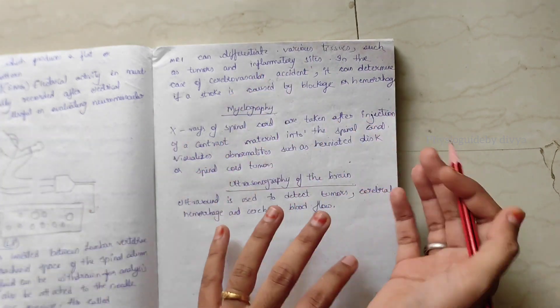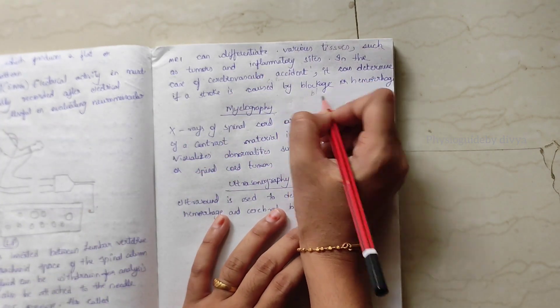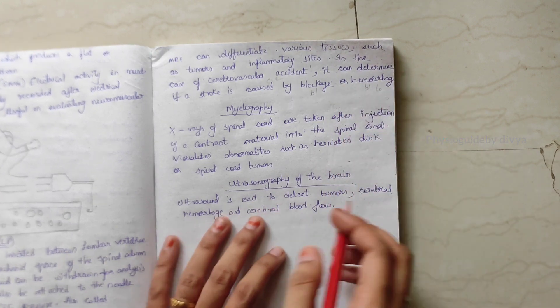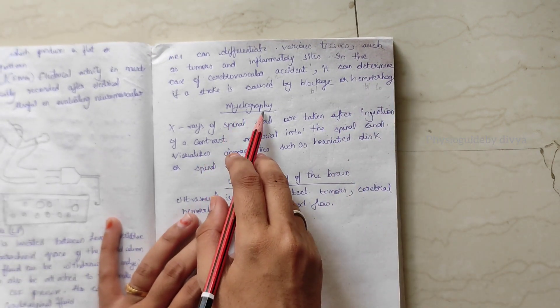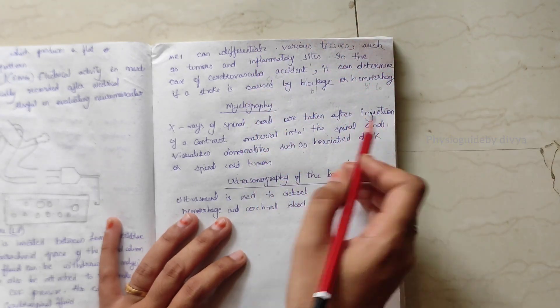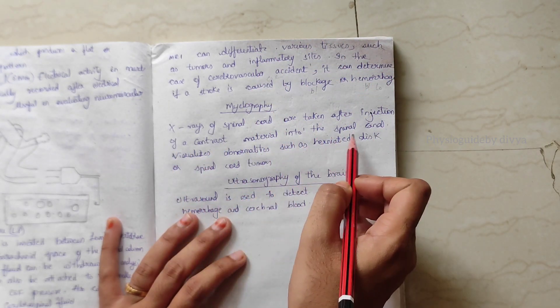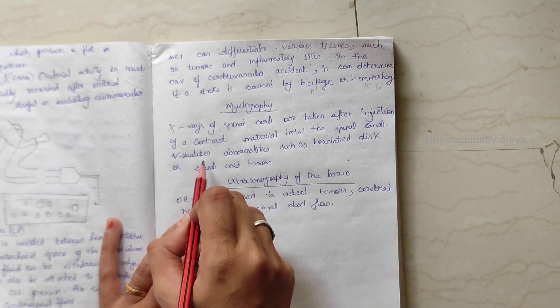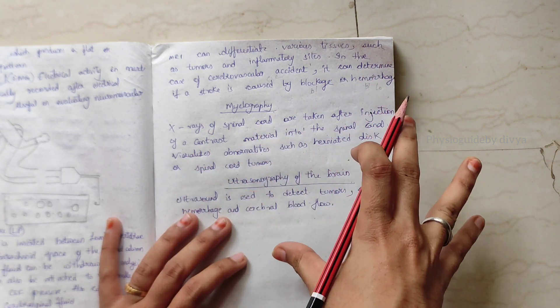Myelography. X-rays of the spinal cord are taken after injection of a contrast material into the spinal canal. This visualizes abnormalities such as herniated discs or spinal column tumors, which can be identified by this myelography.